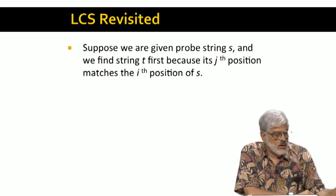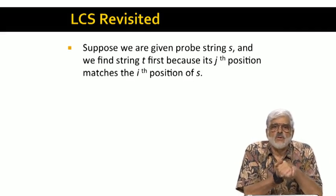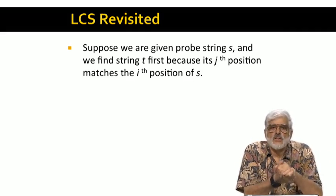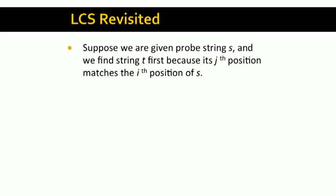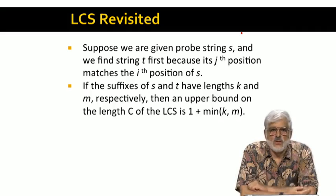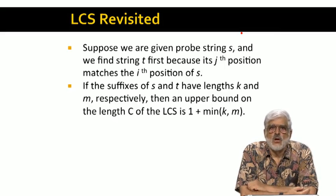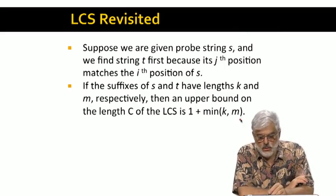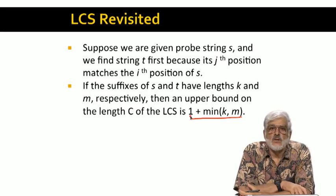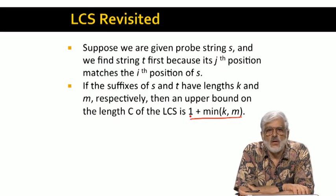We also have to rethink our upper bound on the longest common subsequence of probe string S and some other string T when we take into account the suffix length. So again, we suppose that the first match between S and T occurs at S's position I, and it matches the jth position of T. And let's let A be the symbol in those positions. Then the LCS of S and T consists of the A, and as long as subsequences we can make out of their two suffixes. We don't know what these suffixes are, but we are sure that they cannot have more symbols in common than the shorter of the two suffixes. That's why we get one plus the length of the shorter, as an upper bound on the length of the longest common subsequence.